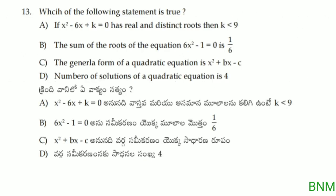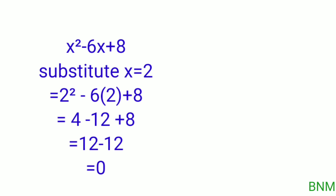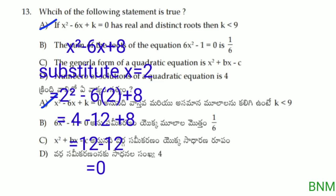Next: which of the following statements is true if x squared minus 6x plus k equals 0 has real and distinct roots? Then k is less than 9. Let's check: if we take k equal to 8, which is less than 9, and substitute x equal to 2 into x squared minus 6x plus 8, we get 4 minus 12 plus 8, which is 12 minus 12, equal to 0. So this is true.